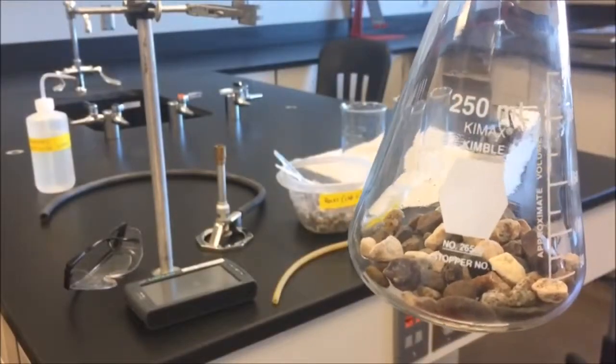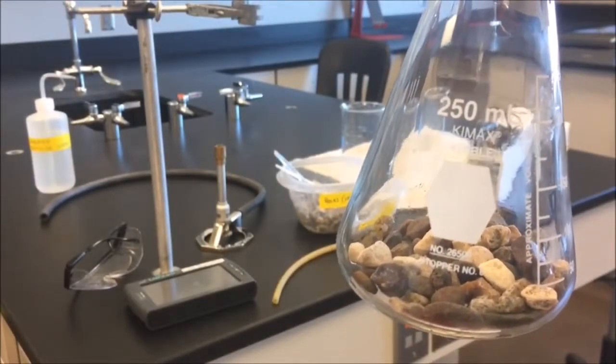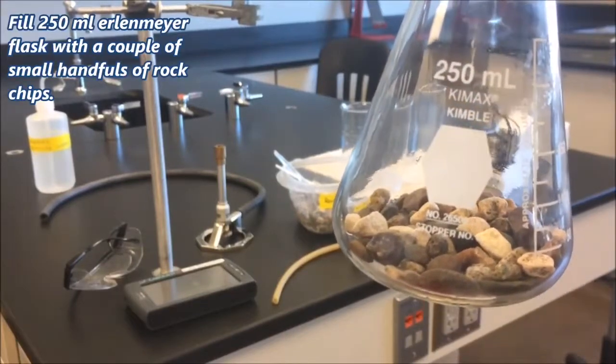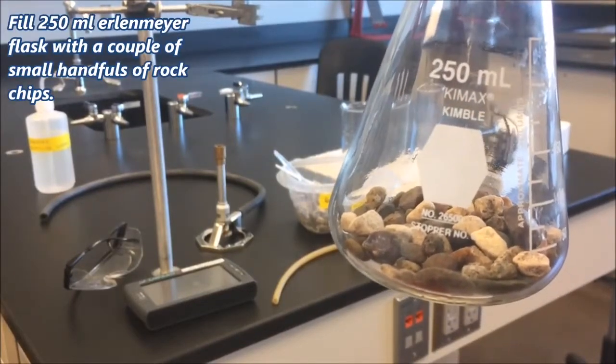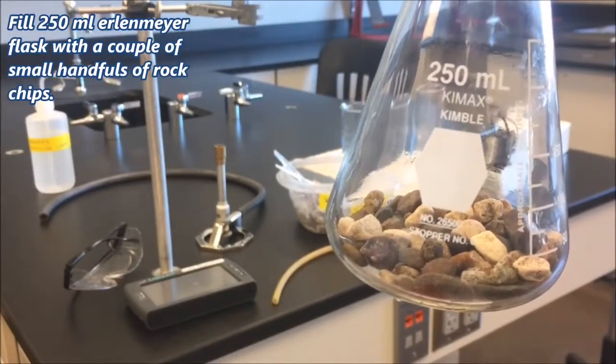So the first thing we want to do in this procedure is to fill the Erlenmeyer flask with a couple small handfuls of rock chips. This is going to prevent the flask from over boiling when we run our procedure.